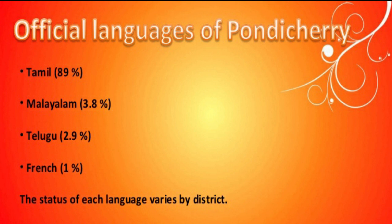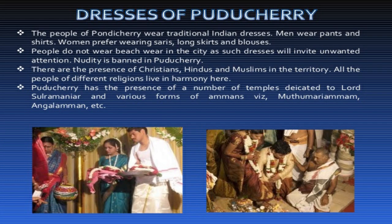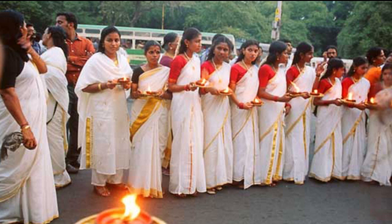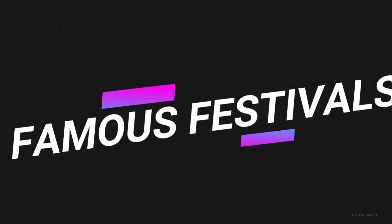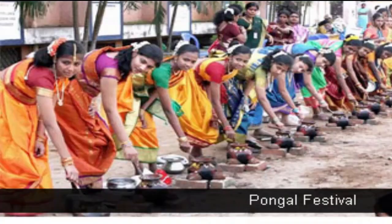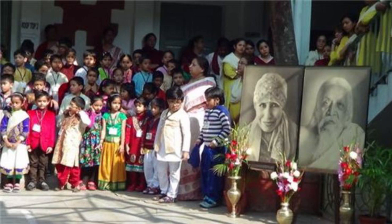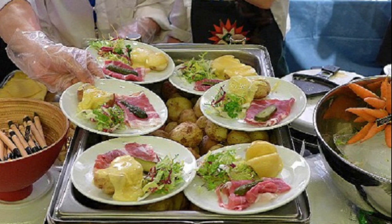The people of Puducherry speak Tamil, English, Telugu, and Malayalam. At one time Puducherry was ruled by the French, which is why some people also speak French. Men traditionally wear dhoti, kurta, or a shirt, but nowadays can be seen in pants and shirts. Women wear saree with blouse and long skirts. Main festivals of Puducherry are Pongal, Masi Magam festival, birth anniversary of Sri Aurobindo, French Food Festival, and Vinayaka Chaturthi.